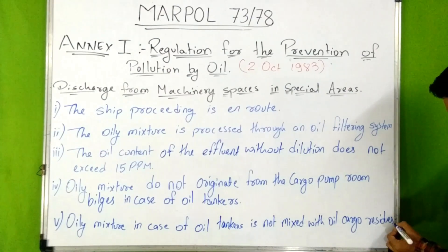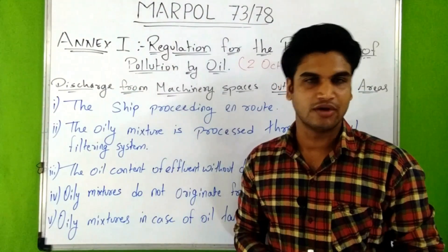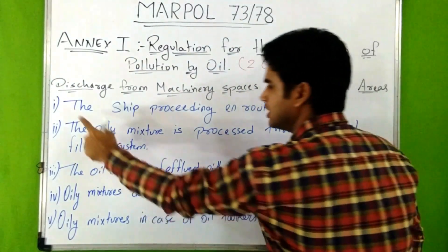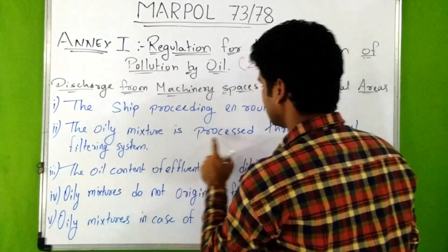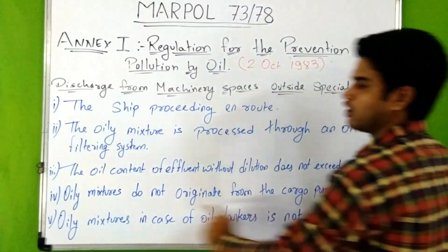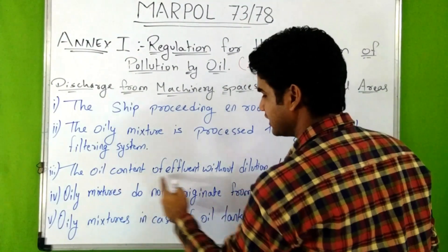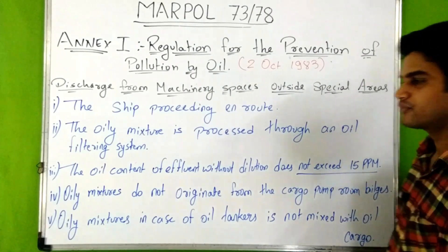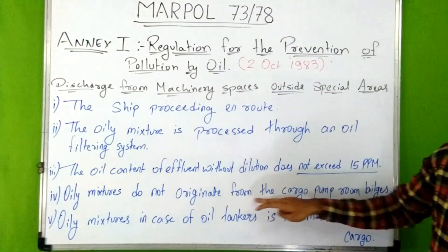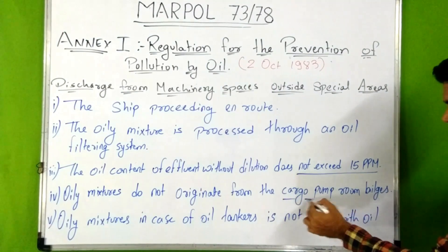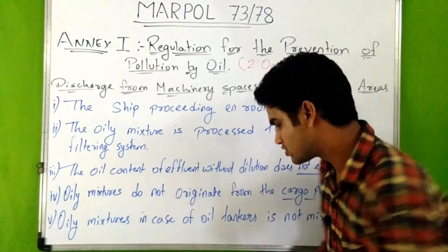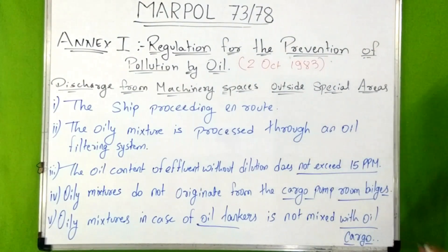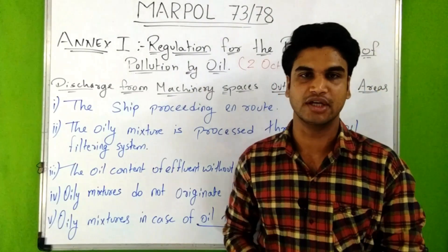Outside special areas, the discharge criteria are: the ship must be proceeding en route; the oily mixture must be processed through an oil filtering system; the oil content of the effluent without dilution must not exceed 15 ppm; oily mixtures must not originate from cargo pump room bilges; and in case of oil tankers, the oily mixture must not be mixed with oil cargo residues.